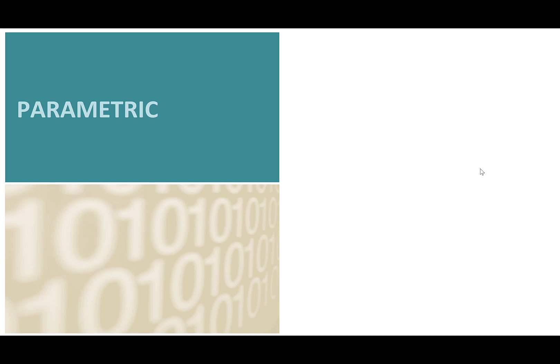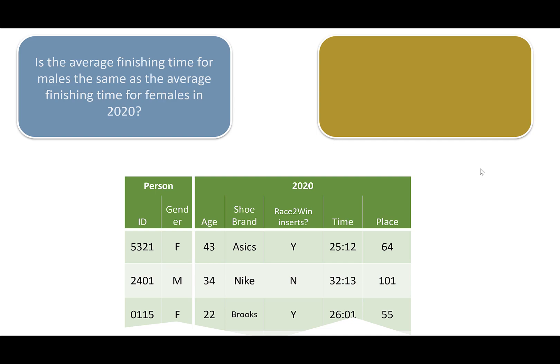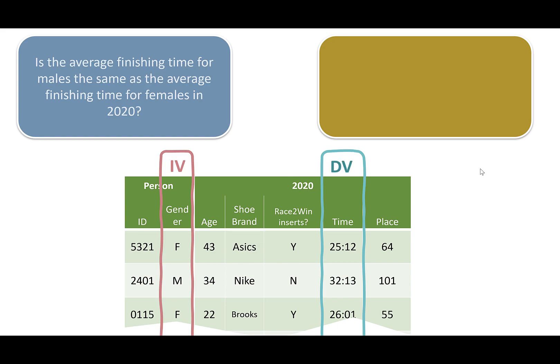Let's get into when you would use parametric tests. I'll pose a question and we'll think about what test to use. First question: is the average finishing time for males the same as the average finishing time for females in 2020? Our independent variable is gender — male or female — and our dependent variable is finishing time. Finishing time is a ratio variable, we have two levels of our independent variable, so we would use an independent samples t-test. This assumes that the times for each group are normally distributed — so among females and among males, their times would each be normally distributed.